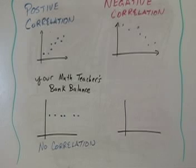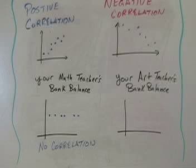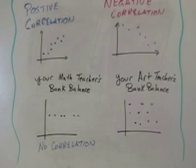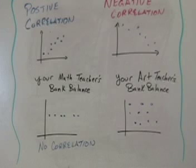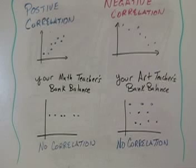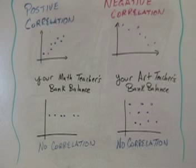Let's look at one more graph. Let's say that this one is your art teacher's bank balance. The data points on this graph are all over the place. Sometimes your art teacher has a lot of money in the bank, sometimes not so much. And there doesn't seem to be any pattern to when there's going to be money and when there won't be. This is not a positive correlation because the bank balance is not steadily increasing over time. It's not a negative correlation because the bank balance is not going down over time. This is another example of no correlation. Both of these don't have an increasing pattern or a decreasing pattern to the data points.